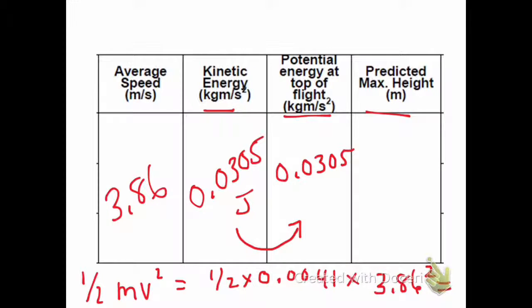Now we're going to calculate the predicted max height. To do this, we're going to use the kinetic energy at the beginning and set it equal to the potential energy at the highest point. In this case, the masses cancel out, and we're solving for the height. So if I simplify that down, I will get the height is equal to v squared over 2g.